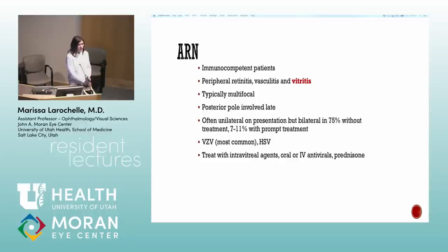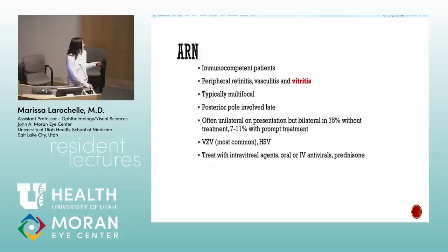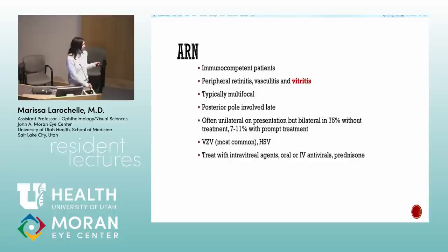ARN typically starts in the periphery with white patches that coalesce. There is a lot of vitritis. In younger people it's usually HSV; in older people it's usually VZV. The other eye can become involved. Contrastingly, progressive outer retinal necrosis is like ARN in immunocompromised patients — fast and scary — but without the vitritis.